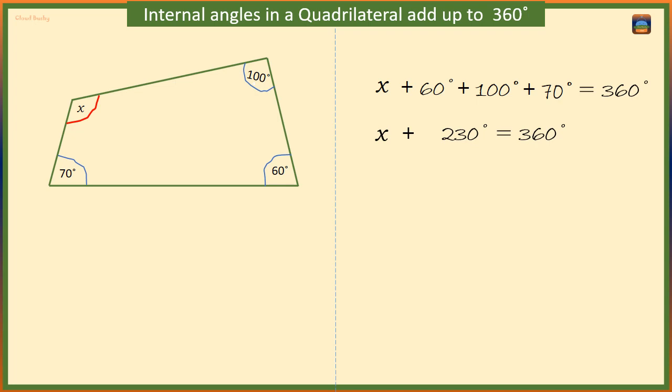We want x by itself. Taking 230 to the right hand side, we have x is equal to 360 degrees minus 230 degrees. This will give us 130 degrees.